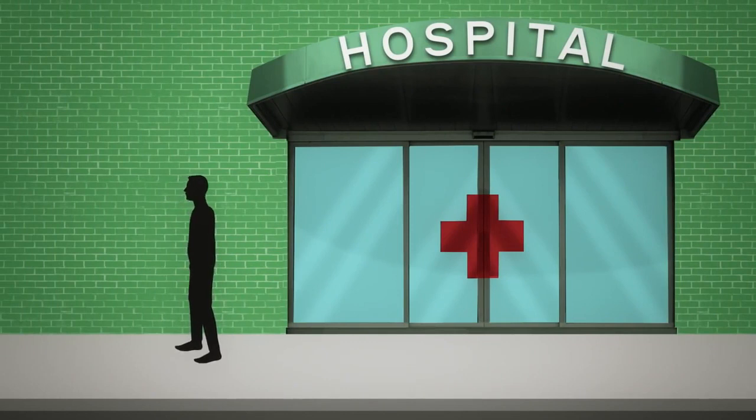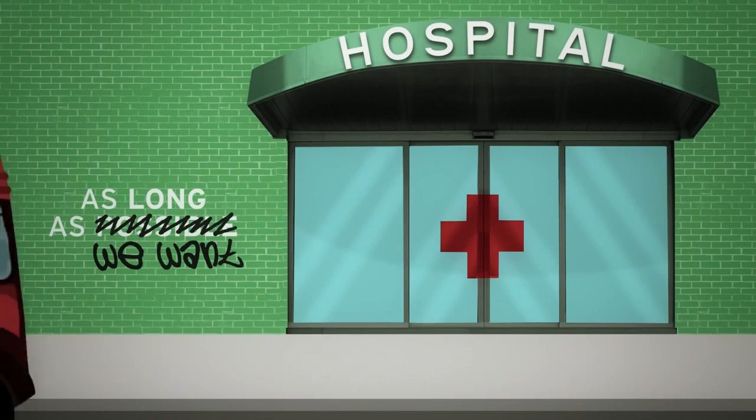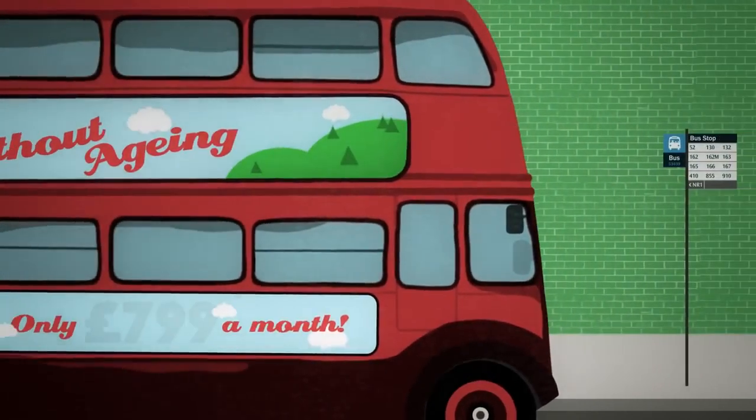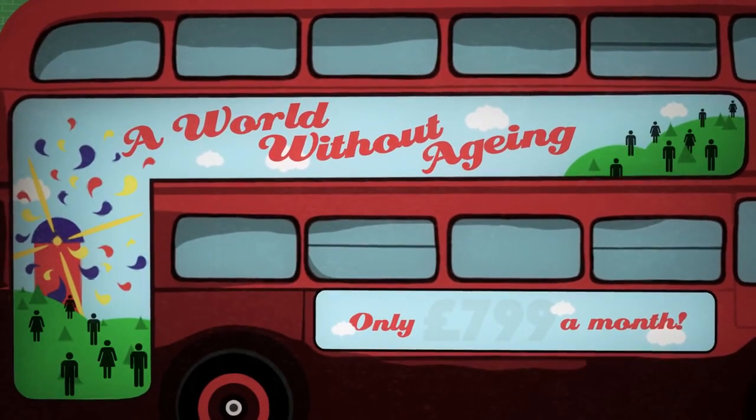It's what happens when as long as possible means as long as we want. But what would a world without aging look like? How would we manage the huge population growth? And who would own the technologies that make it possible?